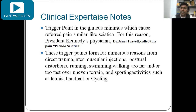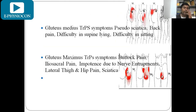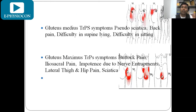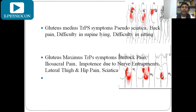We have stretches, lengthening procedures, and myofascial techniques to treat these trigger points, allowing patients to recover from pseudo sciatica quickly. When gluteus medius has trigger points, patients feel pseudo sciatica-like back pain and difficulty lying supine and sitting. When gluteus maximus has trigger points, patients experience buttock pain, ilioischial pain, lateral thigh pain, hip pain, and sciatic-like symptoms.